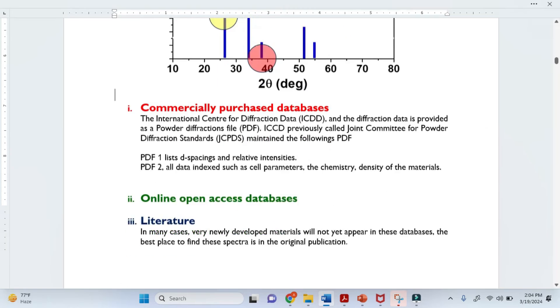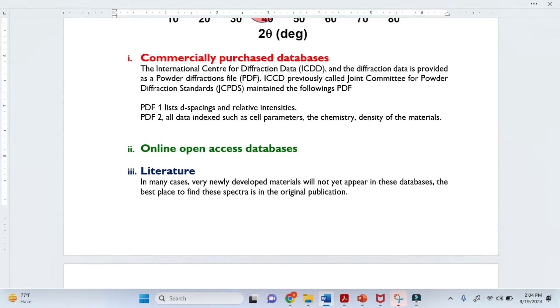Now let's see what are the databases. There are three databases or three sources. The first one is a commercially purchased database. That is the International Centre for Diffraction Data, previously called the Joint Committee for Powder Diffraction Standard.